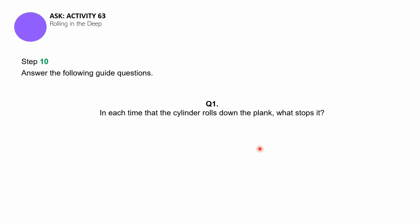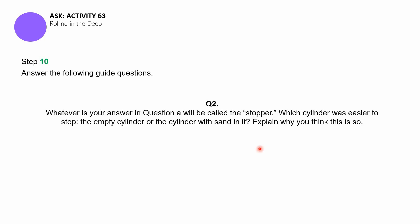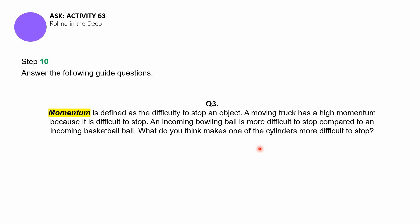I hope that you were able to clean up your workstation. Step number 10, you have to answer the following guide questions. In each time that the cylinder rolls down the plank, what stops it? For the second question, whatever is your answer in question number one will be called the stopper. Which cylinder was easier to stop, is it the empty cylinder or the cylinder with sand in it? Give an explanation why you think this is so. Question number three, momentum is defined as the difficulty to stop an object. A moving truck has a high momentum because it is difficult to stop. An incoming bowling ball is more difficult to stop compared to an incoming basketball. What do you think makes one of the cylinders more difficult to stop, the empty or the filled cylinder?